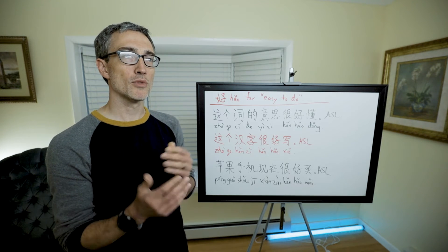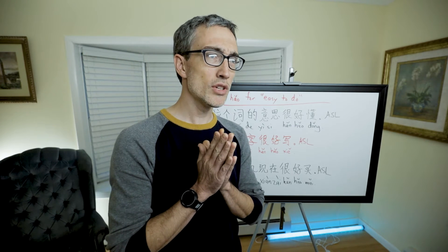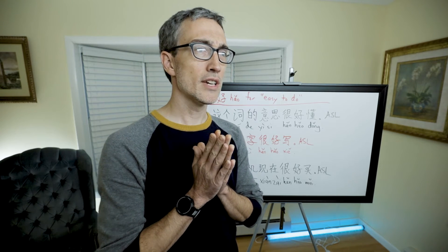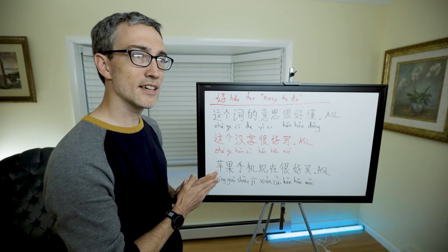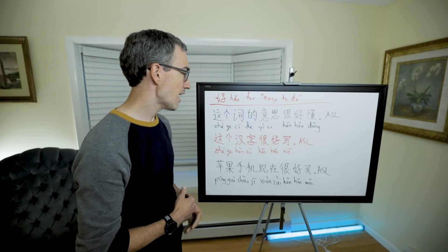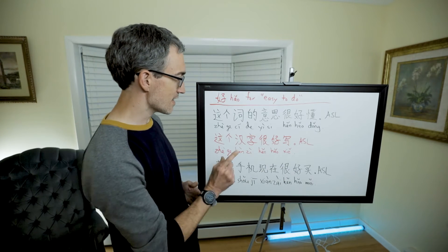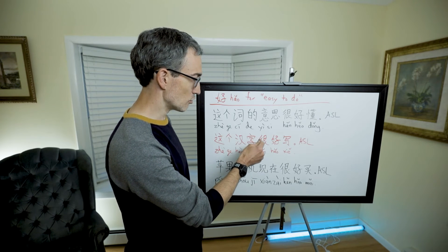And then I also want to point out you can flip it around. Let's take this one: 这个汉字很好写. I could flip this around and say 写这个汉字很容易.